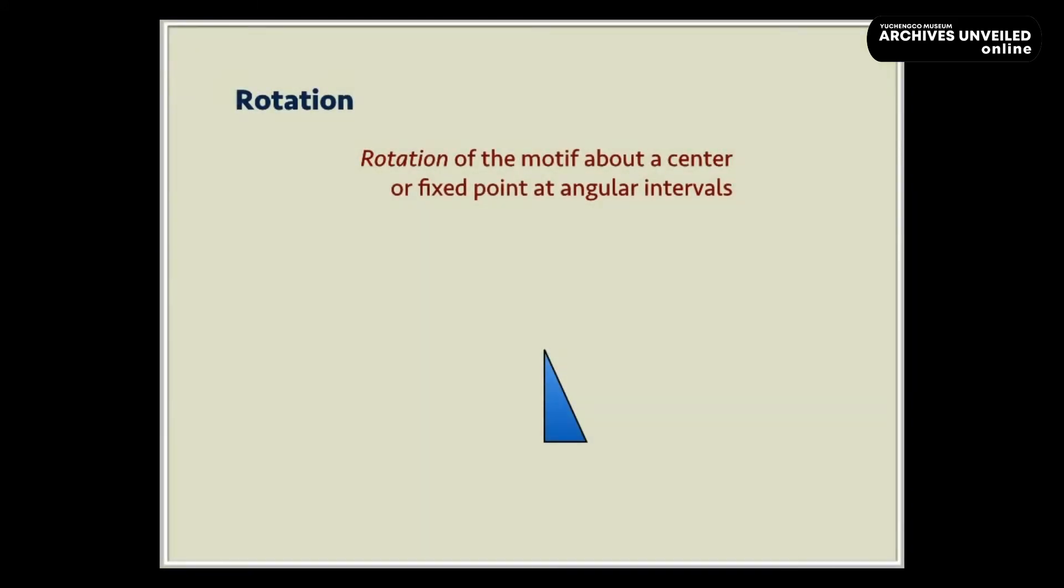A rotation moves a motif above a center or fixed point at angular intervals. The symmetry is represented by a point or a polygonal figure that marks the location of the center of rotation. In this case, the square is used to indicate the center of a 90-degree rotation.